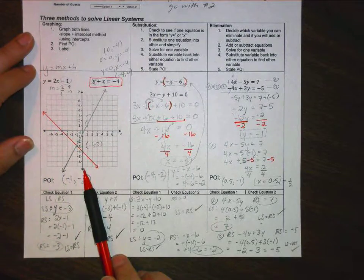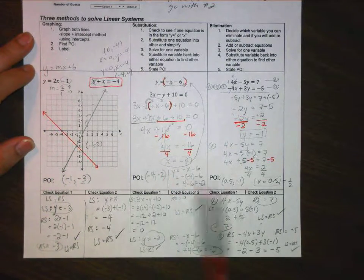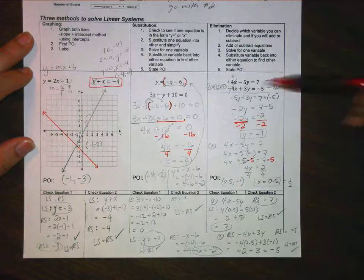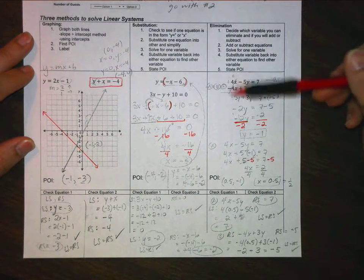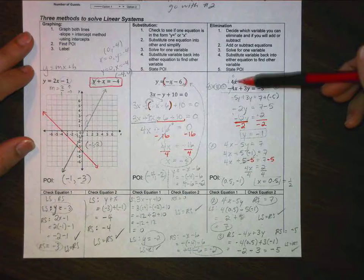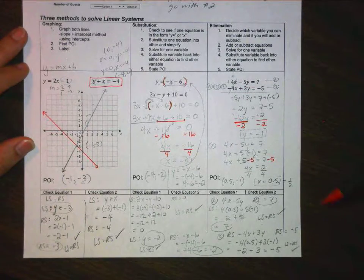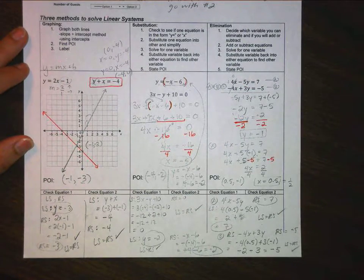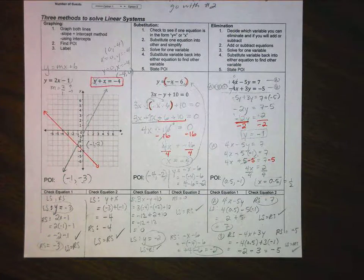There we go. So those are your three methods: graphing, substitution, elimination. How do you decide? For elimination, you should check the numbers in front and see if there's also one that you can multiply easily to get them to be the same. We'll look at that closer on the exam review.